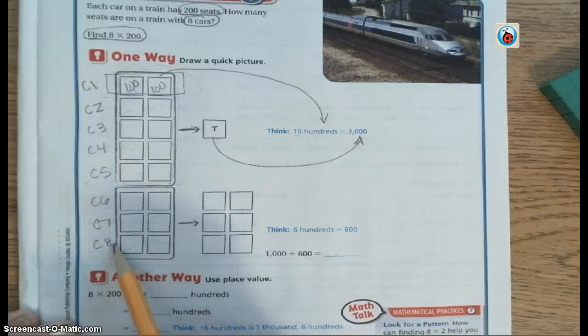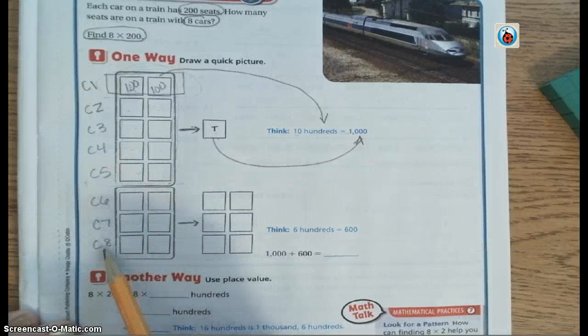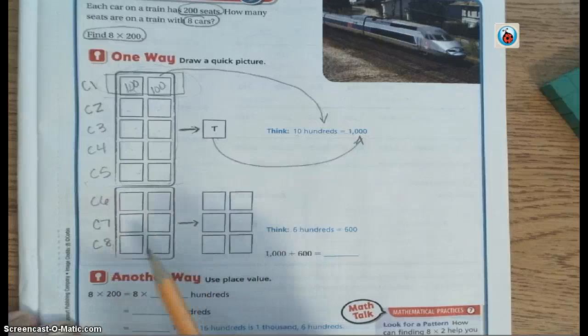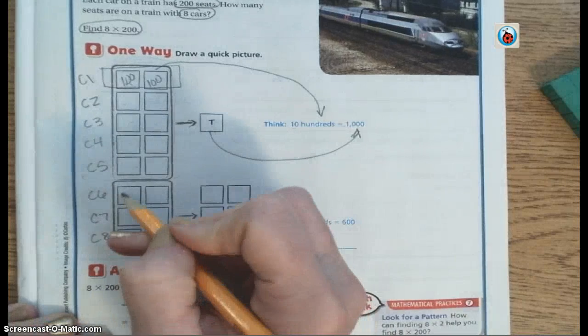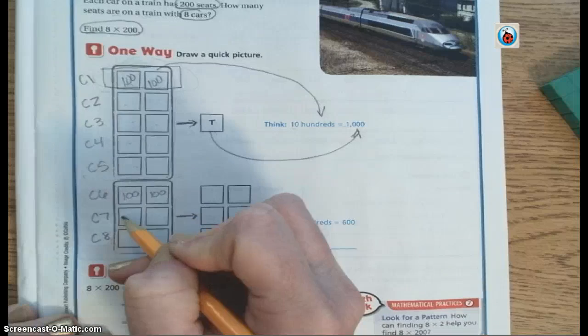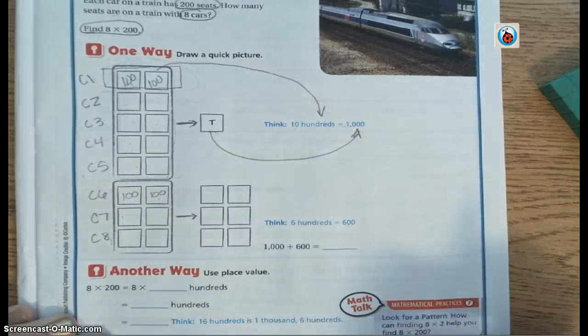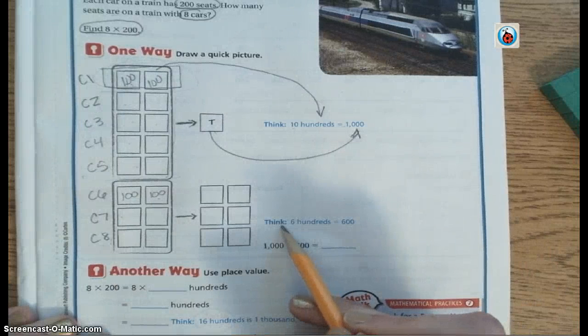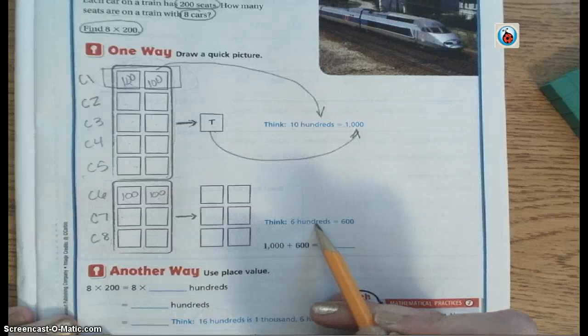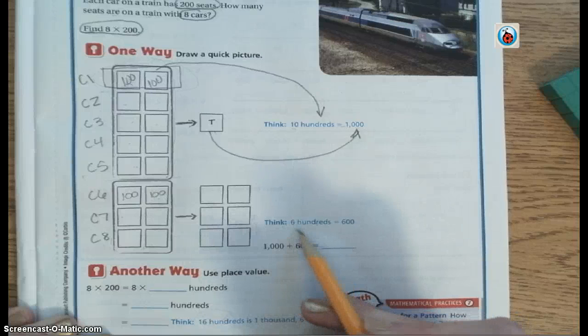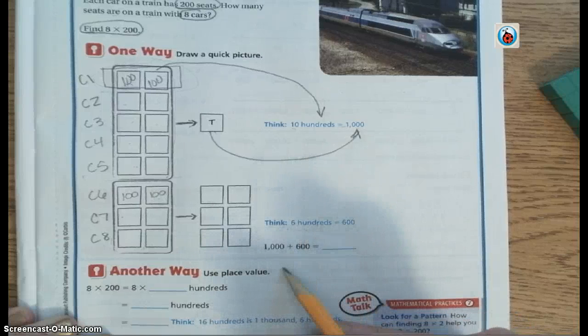But that's not all we have here. We also have these three cars right here, C6, C7, and C8. And we know that each one of these is worth 100, so each car has 200 passengers. So in your head, you're going to think six hundreds is equal to how much? Using your knowledge of place value, you should be able to determine that six hundreds is worth 600.